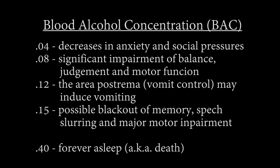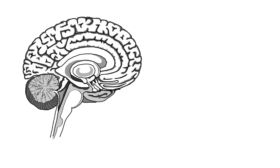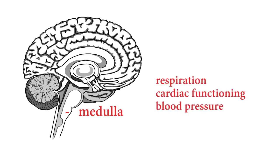At .15, speech begins to be slurred, and there is major motor impairment. Blackouts can also begin at this level, as GABA inhibits the hippocampus responsible for memories. As one passes .3, they are approaching a comatose state, and beyond that, possible death. Sudden death from an alcohol overdose is actually due to respiratory failure, as a critical brainstem region called the medulla becomes so depressed that it stops functioning. The medulla performs critical jobs such as respiration, cardiac function, blood pressure, and some reflex centers, including vomiting and swallowing.